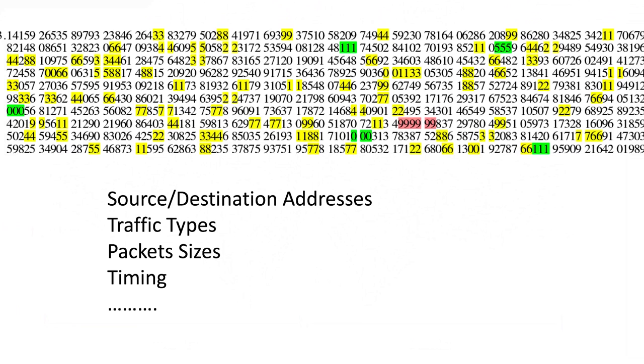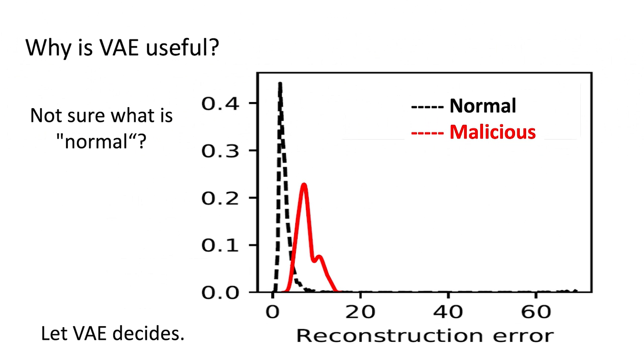To make the discussion more concrete, I'll just show here some of the features that you can collect from the network. Things like source, destination, network addresses, traffic or application types, packet sizes, and timing. You can convert this into many possible variations and look at it differently and come with many features to look at.